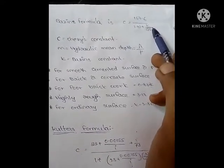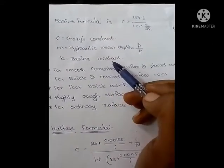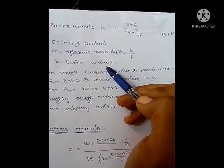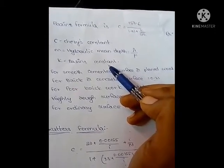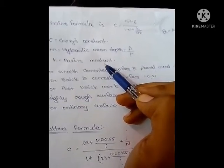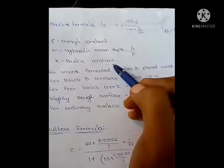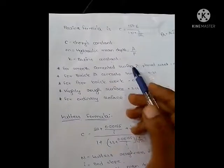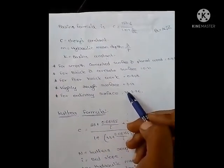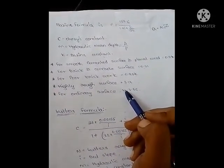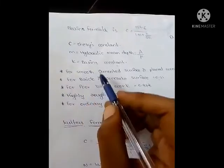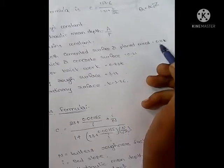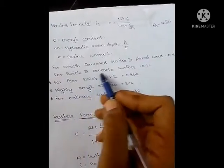What is K? K is Bayesian's constant. In 90% of examinations, this Bayesian's constant will be given in problems. If not given, we have to find it. There are five fixed values based on the surface of that channel. If the channel is smooth cemented surface, the Bayesian's constant will be 0.11.